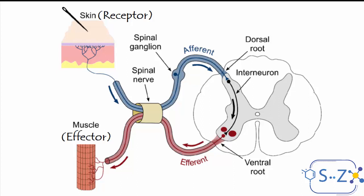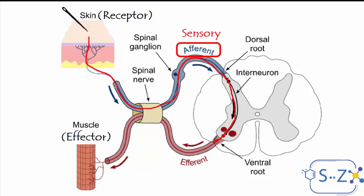To demonstrate what happens inside the spinal nerves and how the nervous message moves: it starts from the skin, the receptor, which receives the stimulus and converts it into a nervous message. The nervous message moves through the sensory nerve found in the dorsal root — this is called the afferent or sensory nerve, because it carries the afferent nervous message from the receptor to the nerve center. The message then moves through the interneuron linking the sensory nerve to the motor nerve, and continues through the ventral root via the efferent or motor nerve to the effector organ, where the reflex occurs.